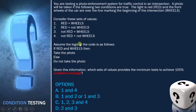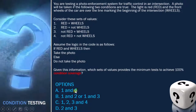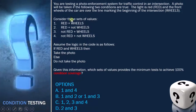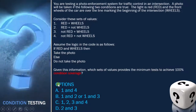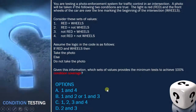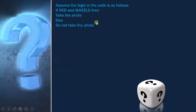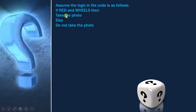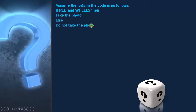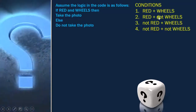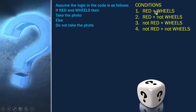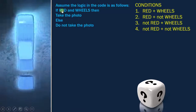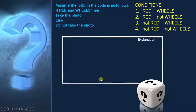We will evaluate each pair by checking whether together they cover true and false for each atomic condition. There are two atomic conditions in the code: 'red' and 'wheels.' We draw a table showing the condition values and decision output for each selected test pair.